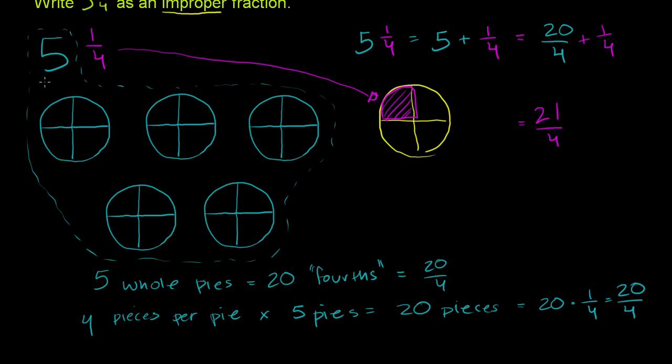this 5 is 20 pieces. 20 pieces of pie. And you can even count it, 1, 2, 3, 4, 5, 6, 7, 8, 9, 10, 11, 12, 13, 14, 15, 16, 17, 18, 19, 20. But a quicker way is to say, well, we have 5 pies. Each of them have 4 pieces. 5 times 4 is 20.